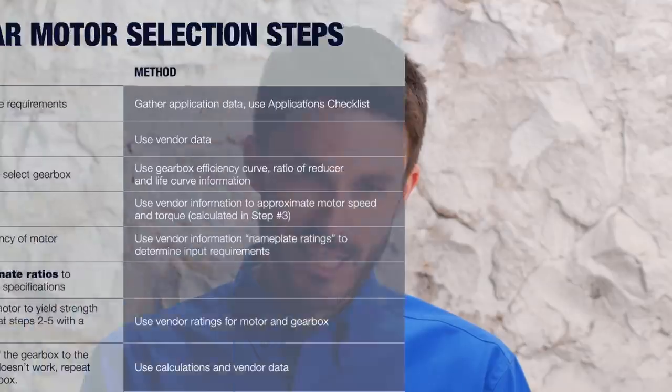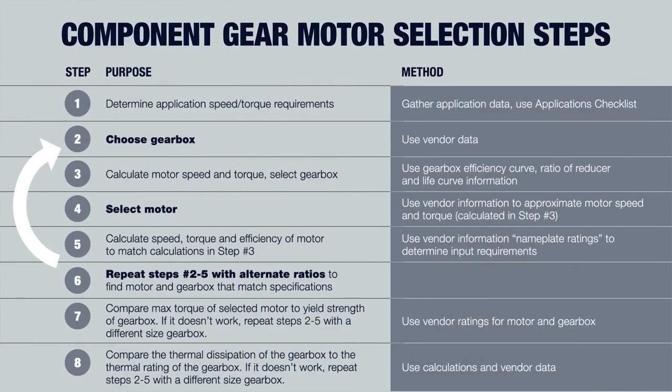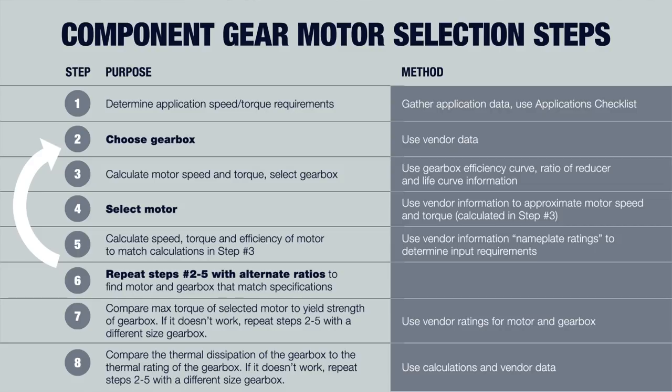Once the motor is selected, the actual speed, torque, and efficiency need to be calculated. This chart assumes the motor and reducer reference charts we shared in previous videos — links included below — have been used to make some basic type selections. Then you need to refer to the manufacturer data for those components to make the calculations. Let's take a deeper look at these steps.